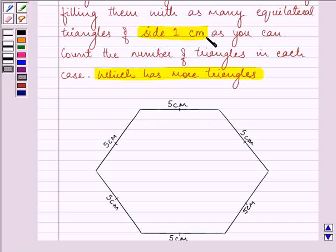we need to take the base, each and every base, that is 5 cm each and we need to draw equilateral triangles like this.